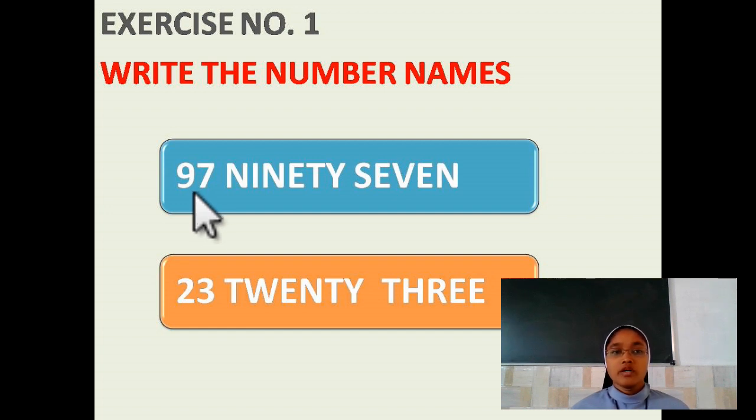Here, which number is here children? 97. N-I-N-E-T-Y. 90. S-E-V-E-N. 7. 90, 7.